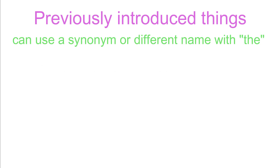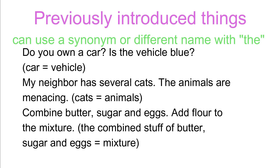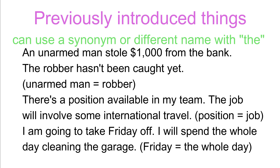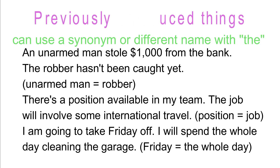Instead, we can use synonyms or a new word that denotes the previously introduced thing. 'Do you own a car? Is the vehicle blue?' — car equals vehicle. 'My neighbor has several cats. The animals are menacing.' — cats equals animals. 'Combine butter, sugar, and eggs. Add flour to the mixture.' — the combined stuff of butter, sugar, and eggs equals mixture. 'An unarmed man stole a thousand dollars from the bank. The robber hasn't been caught yet.' — unarmed man equals robber. 'There's a position available in my team. The job will involve some international travel.' — position equals job. 'I am going to take Friday off. I will spend the whole day cleaning the garage.' — Friday equals the whole day.